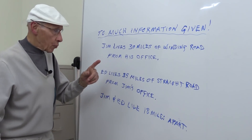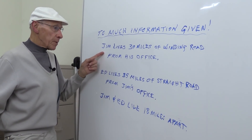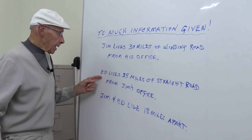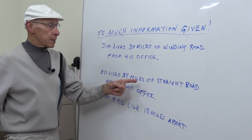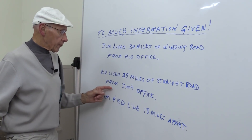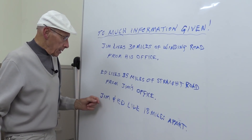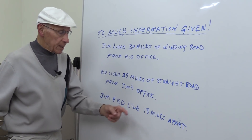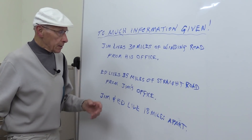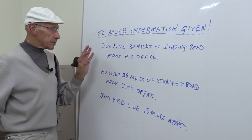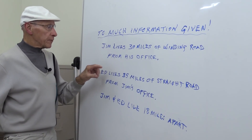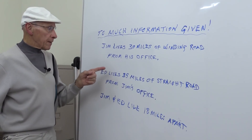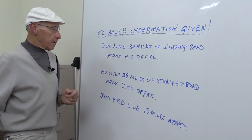This is a case in point. Jim lives 30 miles of winding road from his office. Ed lives 35 miles of straight road from Jim's office. Jim and Ed live 18 miles apart. The question you're asked to solve is: what is the difference in mileage that Ed drives compared to Jim?